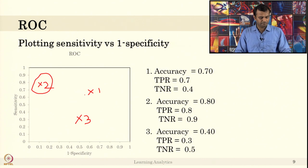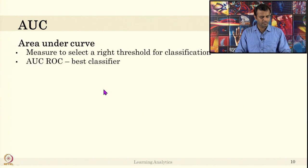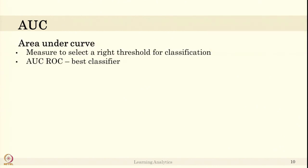So you now understand what the ROC curve is. It is simply the curve between sensitivity and 1 minus specificity to measure which classifier is doing good, considering both true positive rate and true negative rate in order to pick the classifier. The other important metric in machine learning to pick the right classifier with the right threshold is called Area Under Curve (AUC).